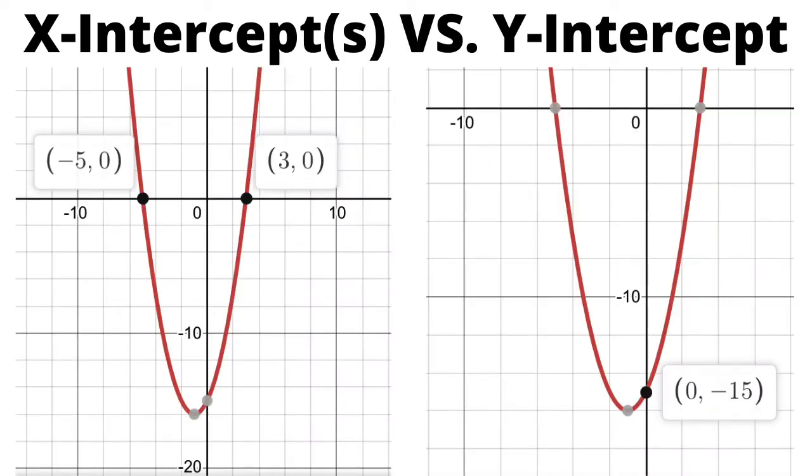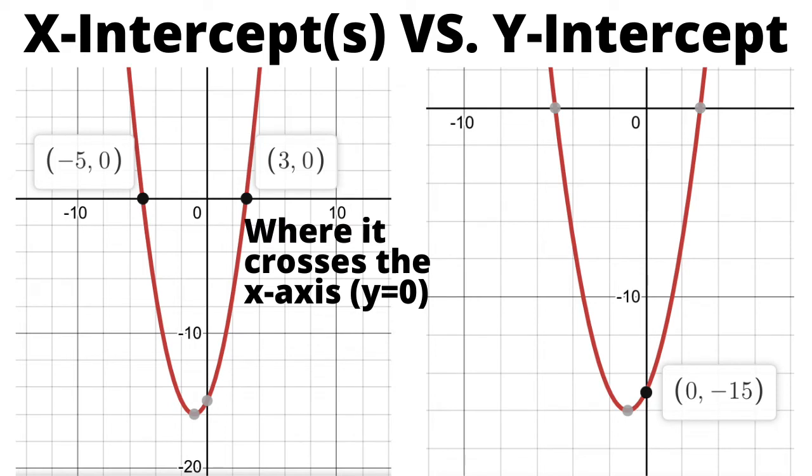So you'll notice in this example here, I have the two x-intercepts at negative 5 and 3, and I have the one y-intercept at negative 15. So notice with my x-intercepts, it is wherever it crosses that x-axis, so it's going left or right, but not up or down at all. So that means our y is going to have to equal 0.